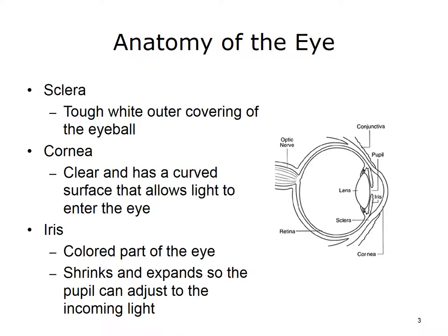Here is a brief overview of the anatomy of the eye. The sclera is the tough white outer covering of the eyeball. The cornea is clear and has a curved surface that allows light to enter the eye. The iris is the colored part of the eye that shrinks and expands so the pupil can adjust to the incoming light.